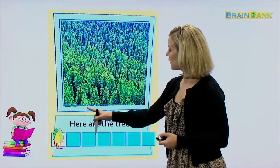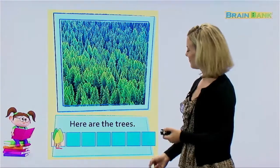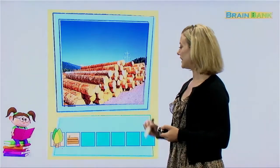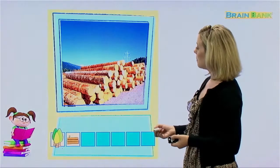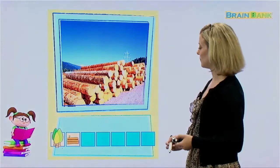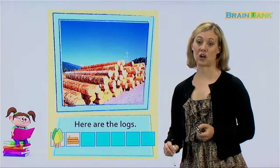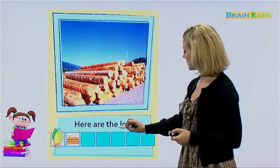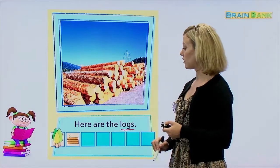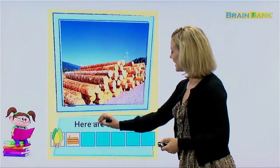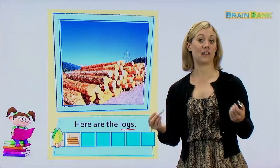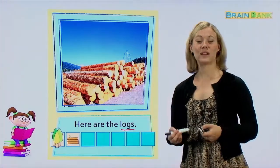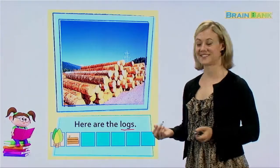So first, here are the trees. Let's read it all together: Here are the trees. So first we need trees. Next, these are the same trees we just saw, but it looks like all the leaves and the branches are gone. This we call logs. The trunk of the tree, without any of the green parts, are just the logs — L-O-G-S. Here are the logs. What do you think we need logs for when building a house? Yes, we need the wood. We need the wood to build the main structure of the house.